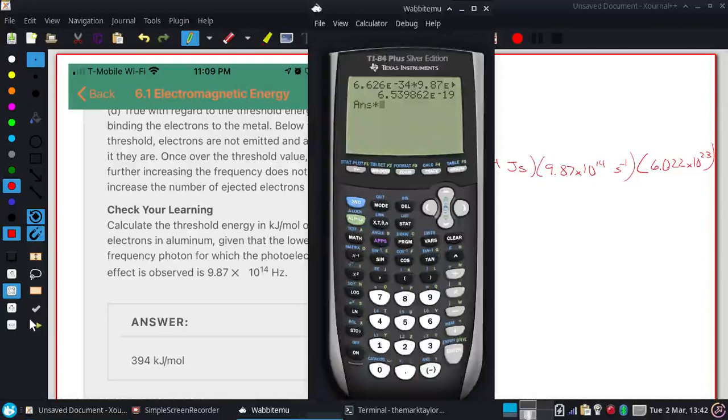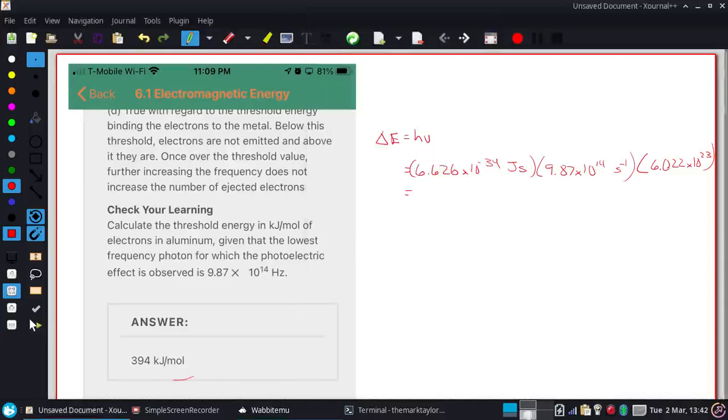So just multiply this by 6.022 times 10 to the 23rd, and we get 394,000. But this would be just joules, so we would convert that to kilojoules by moving the decimal over three places and get the 394.